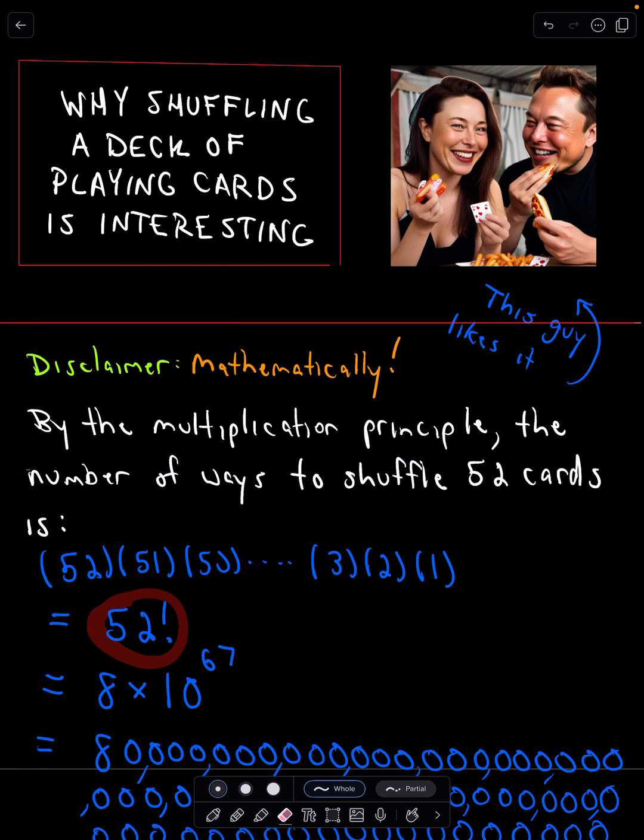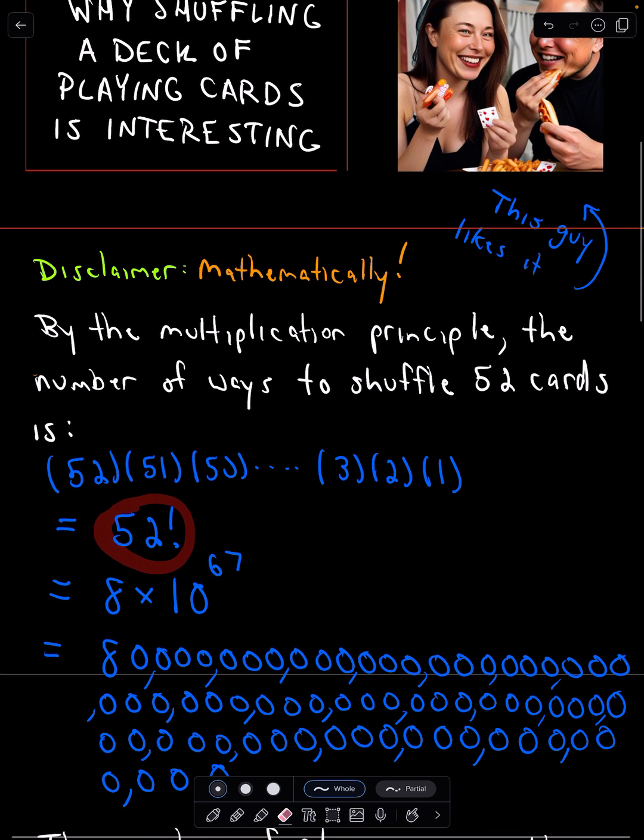So why is shuffling a deck of playing cards interesting mathematically? Well, the idea is we can use the multiplication principle to count the number of ways to shuffle 52 cards.